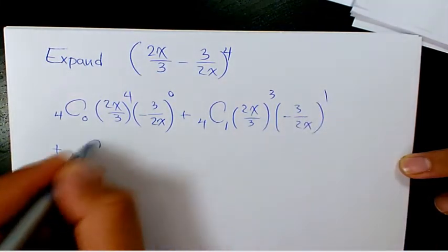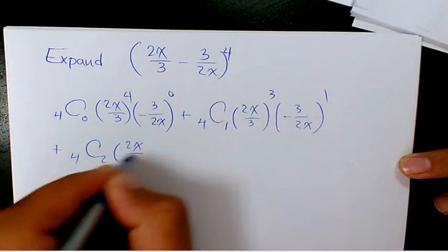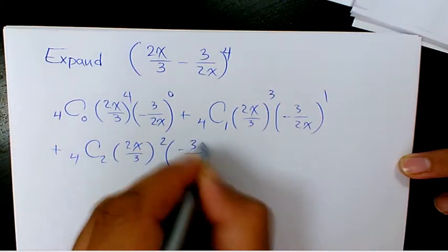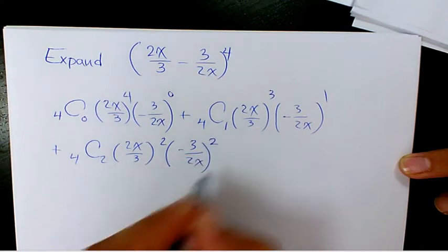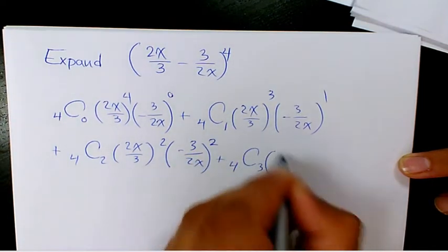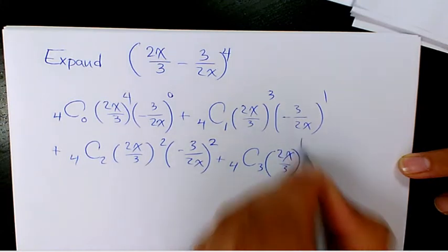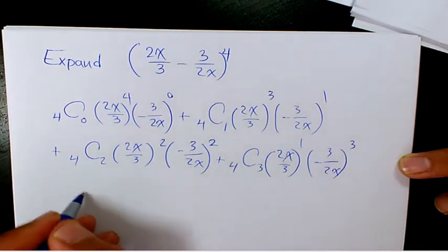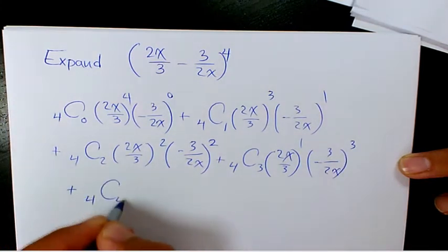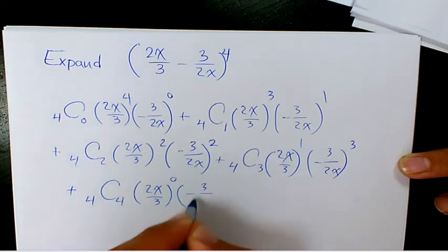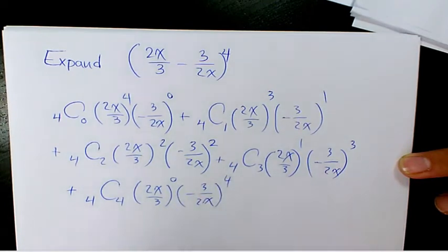Plus 4C2, 2x over 3 to the power of 2, negative 3 over 2x to the power of 2, plus 4C3, 2x over 3 to the power of 1, negative 3 over 2x to the power of 3, and 4C4, 2x over 3 to the power of 0, negative 3 over 2x to the power of 4.